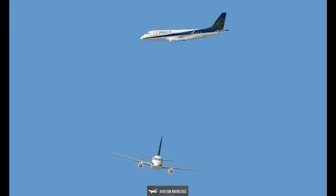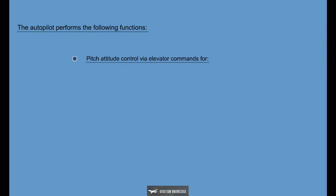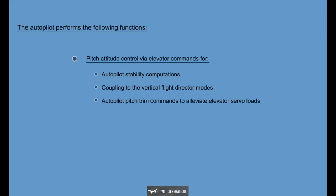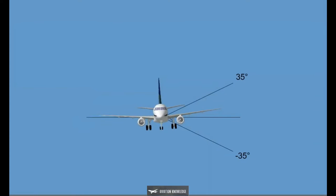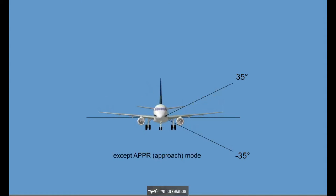The Autopilot provides automatic flight path and roll control of the aircraft. The Autopilot performs the following functions: Pitch Attitude Control via Elevator Commands for Autopilot Stability Computations, Coupling to the Vertical Flight Director, Autopilot Pitch Trim Commands to Alleviate Elevator Servo Loads, Roll Attitude Control via Aileron for Autopilot Stability Computations, and Coupling to the Lateral Flight Director Modes.